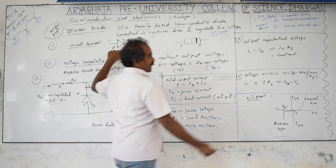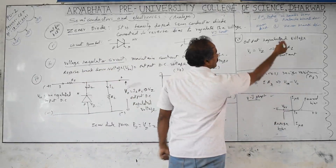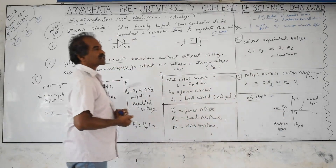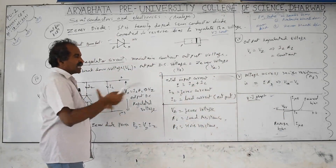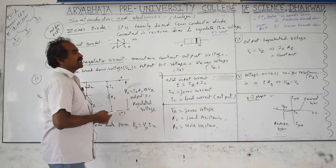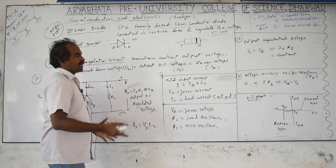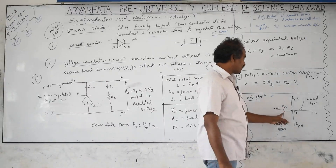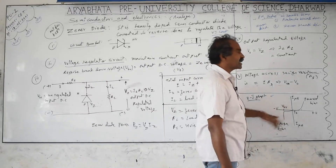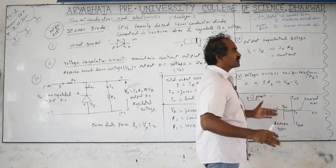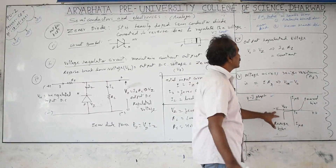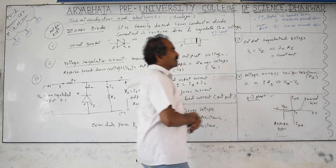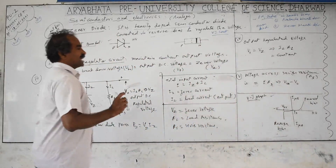The Zener voltage equals the breakdown voltage. Because doping concentration is high, there are more impurity atoms providing charge carriers more easily. With a small applied electric field, a high reverse current can flow. After reaching a particular reverse bias value, the voltage across the diode remains constant — without needing to break bonds or increase temperature, so the diode does not damage.